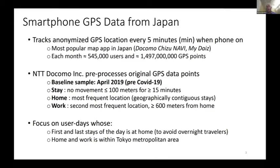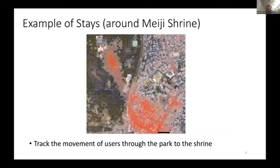We measure people's home stay as their most frequent location where the device is found, measured by geographically contiguous stays. Their work location is the second most frequent location that's more than 600 meters from home — a good way of recording work location in April 2019 before the COVID-19 pandemic. In our main results, we focus on user-days where the first and last stays of the day are at home, enabling us to measure trip chains when you leave home and return to home. We focus on users within the Tokyo metro area.